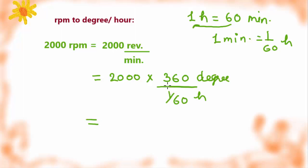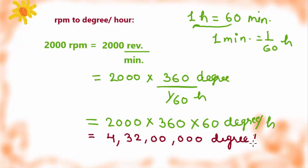Divide over divide. Divide over divide is multiply, so 60 would go up in the multiplication. 2000 times 360 times 60 degree per hour. This way you will convert it into degree per hour. We can write it as scientific notation.